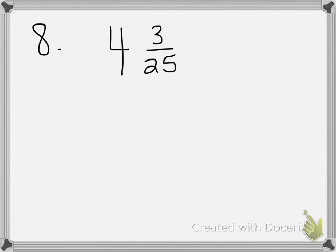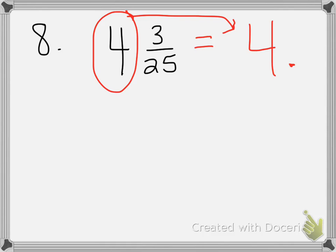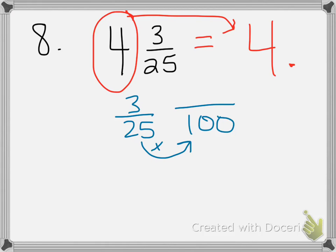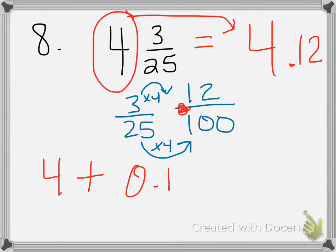For number 8, the directions are still 'write each fraction or mixed number as a decimal.' Because this is a mixed number with a 4, I write equals 4-point-something right away — you can't forget the whole number, and a lot of people got this wrong by leaving it out. Now for 3/25: 25 is compatible with 100, so multiply top and bottom by 4. Three times 4 is 12, giving 12/100, which is 0.12. So the final answer is 4.12.